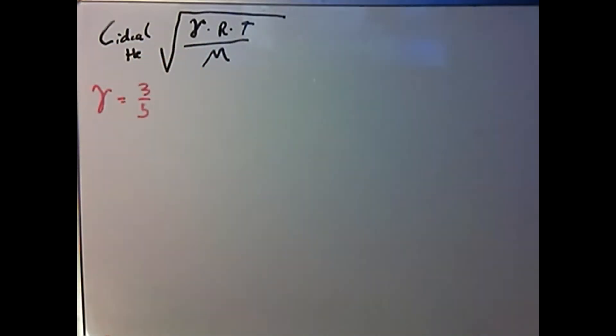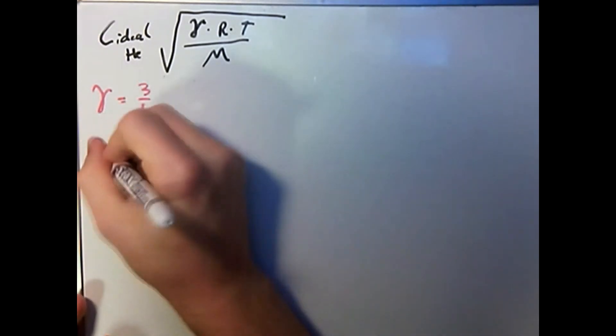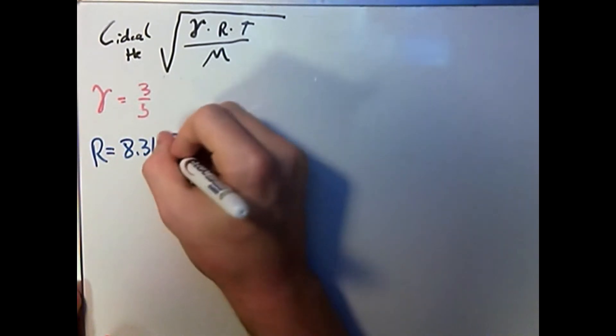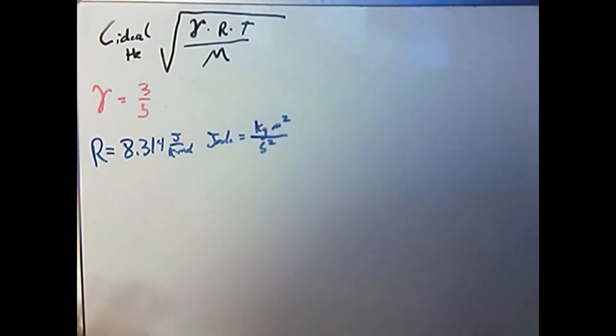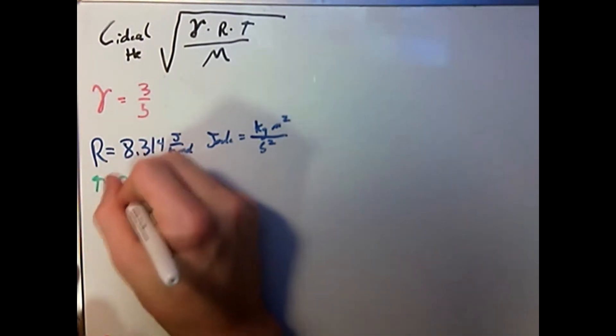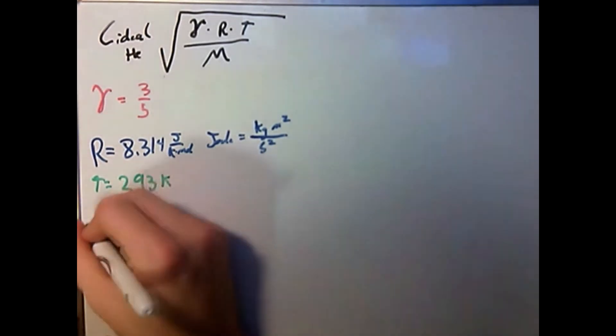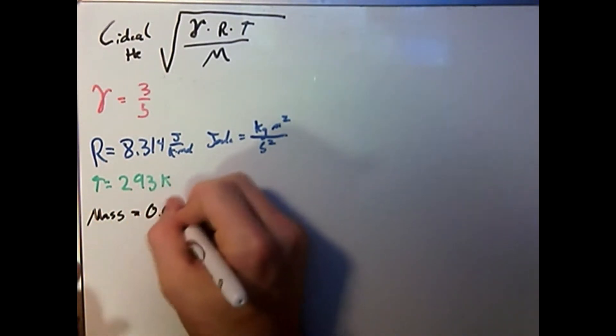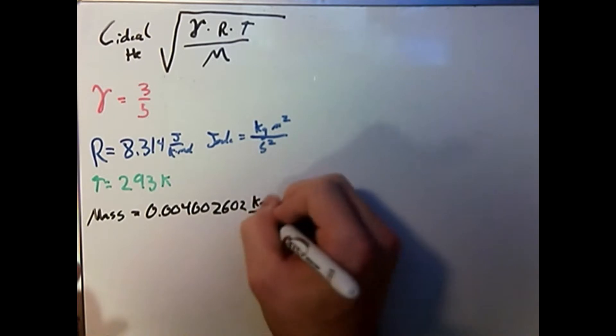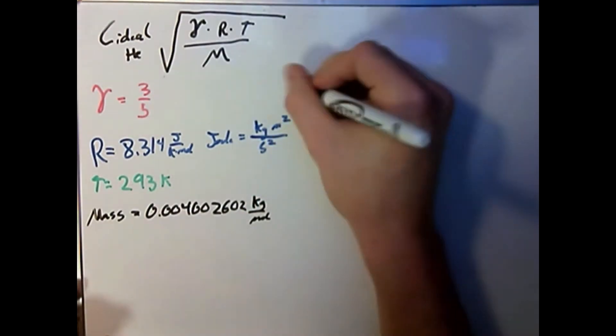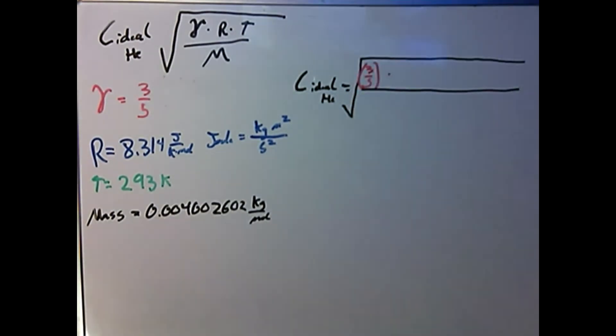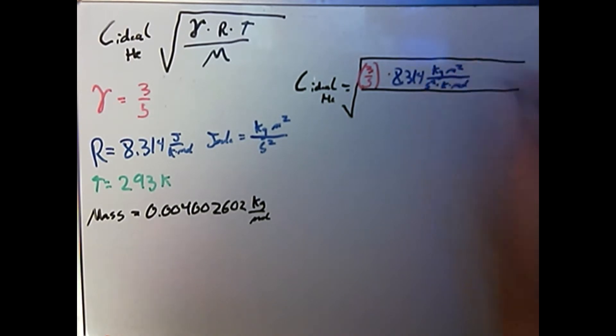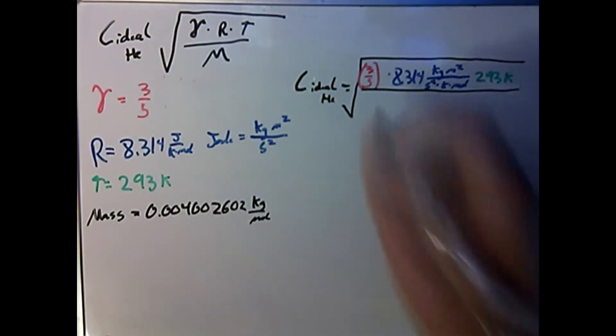Gamma, this time, is going to be 5 thirds. Going to the other terms in our equation, R is still the molar gas constant, 8.314 joules per Kelvin mole. And remember, a joule is a kilogram meter squared per second squared. T is still temperature, and it was done at 293 Kelvin again. A quick glance at the periodic table will tell us that the mass of helium is 0.004002602 kilograms per mole. Going back to our equation, we plug in our gamma, our R, our T, and our molar mass.